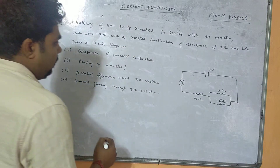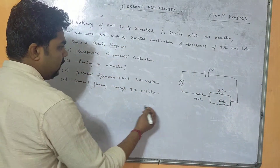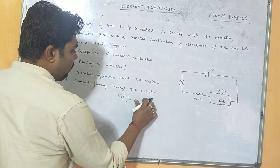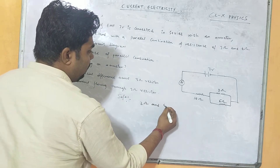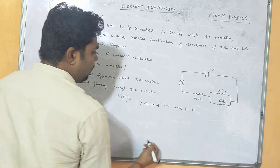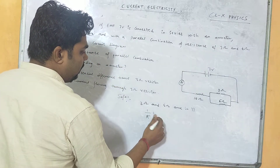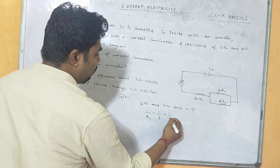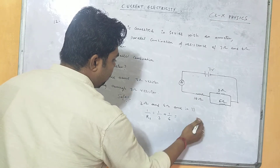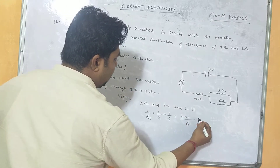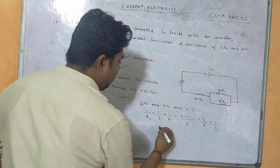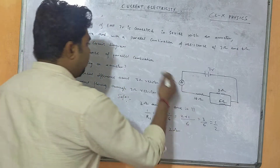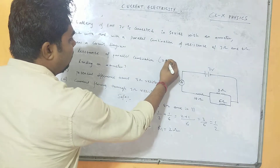First we calculate the resistance of the parallel combination. 3 ohm and 6 ohm are in parallel, so 1/R1 = 1/3 + 1/6. Taking LCM of 6: that is (2+1)/6 = 3/6 = 1/2. Therefore R1 = 2 ohm. So the first answer — resistance of the parallel combination — is 2 ohm.